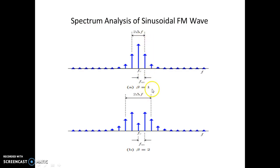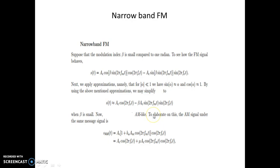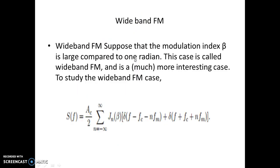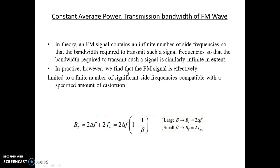The FM spectrum shows that when β = 1, there is one lower sideband and one upper sideband, called significant sidebands. With β = 2, there are two lower and two upper sidebands. FM can be narrowband when β is very small, or wideband when β is large compared to unity. FM produces constant average power. The transmission bandwidth of FM is theoretically infinite but practically limited.